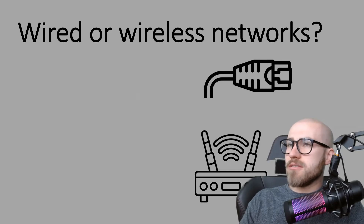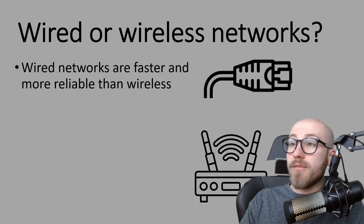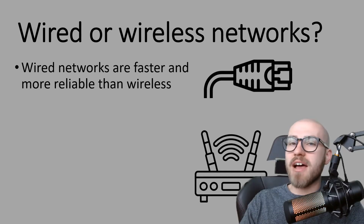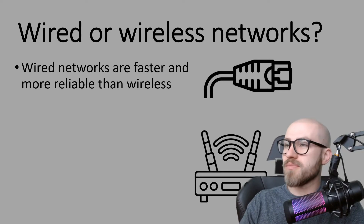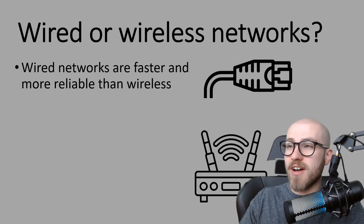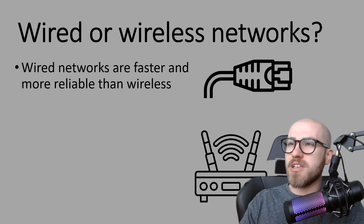When you set up a network you can choose whether to set it up as a wired or wireless network. Wired networks are faster and more reliable than wireless. A regular Ethernet cable usually has around ten times faster transfer rate than a wireless network. Lots of networks will also use fiber optic, which is even faster, and we will do a lesson on network hardware that goes into more detail about which one performs the best.